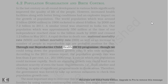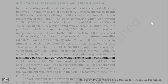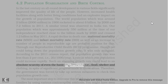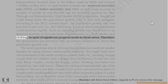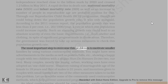Through the Reproductive Child Health (RCH) program, we could bring down the population growth rate, but only marginally. According to the 2011 census report, the population growth rate was less than 2% — a rate at which our population could increase rapidly. Such an alarming growth rate could lead to absolute scarcity of even basic requirements like food, shelter, and clothing. Therefore, the government was forced to take serious measures to check this population growth rate, the most important being motivating smaller families through various contraceptive methods.